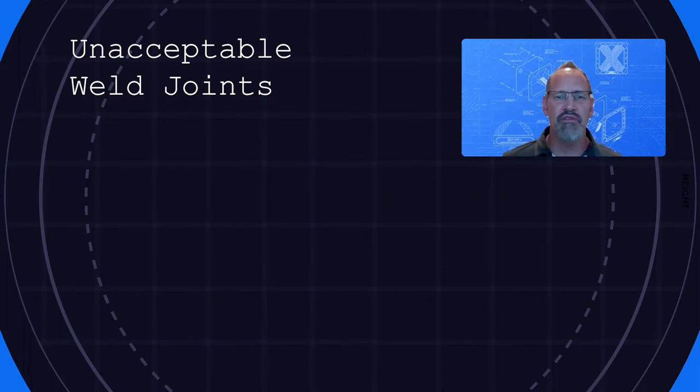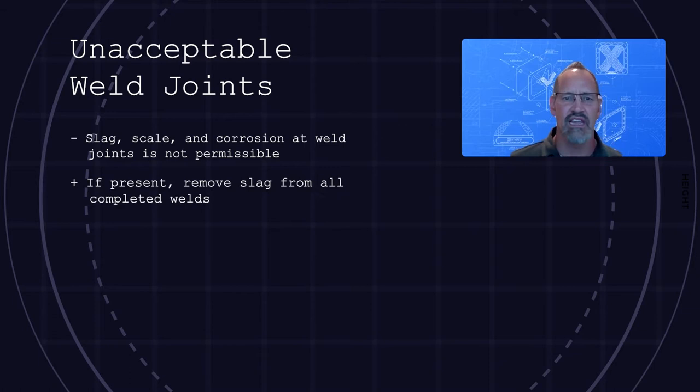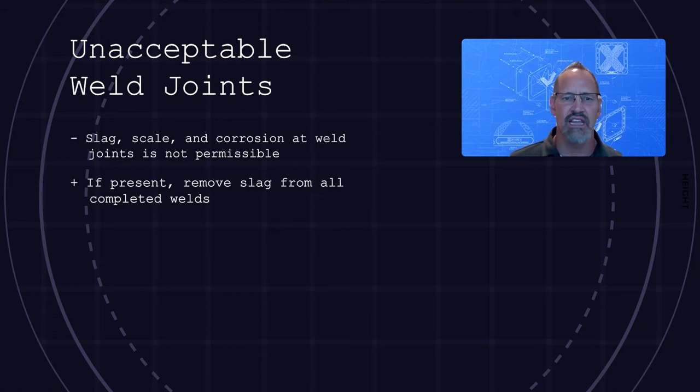We'll start by reviewing some unacceptable cosmetic conditions of finished surfaces. Slag, scale, or corrosion at weld joints is never permissible. If slag is present, it should be removed from all completed welds.